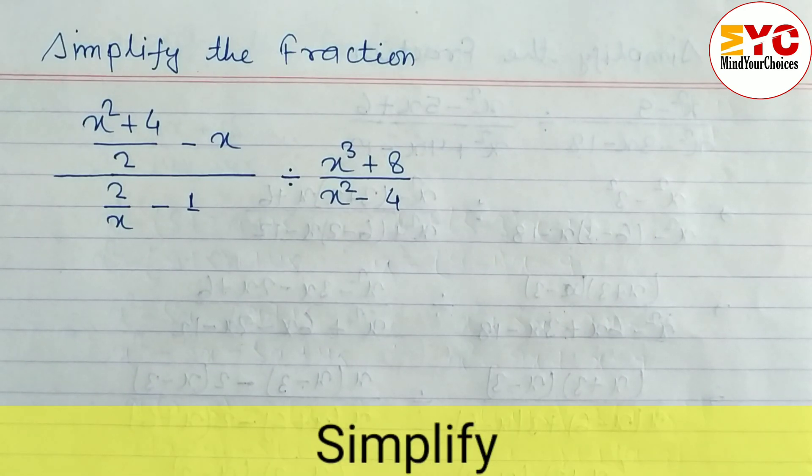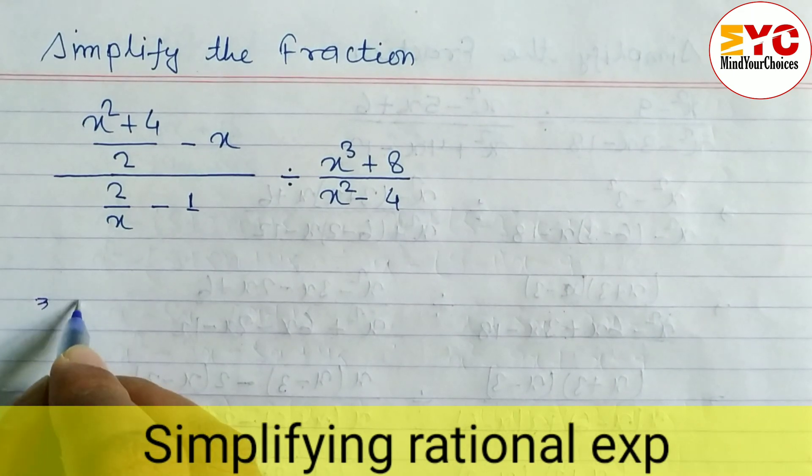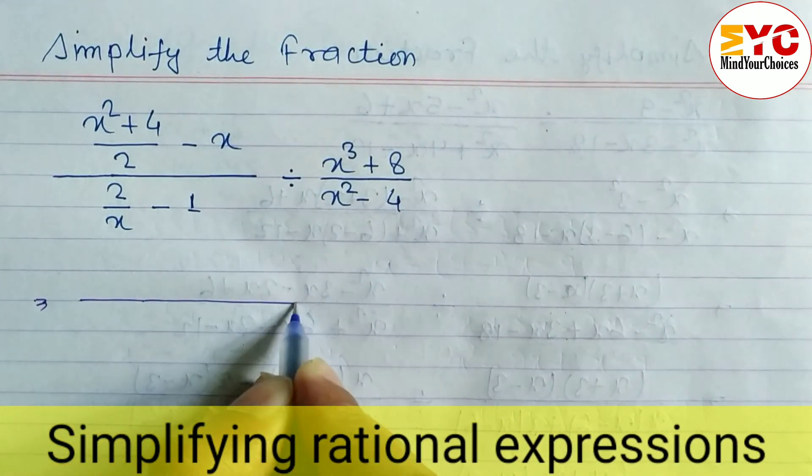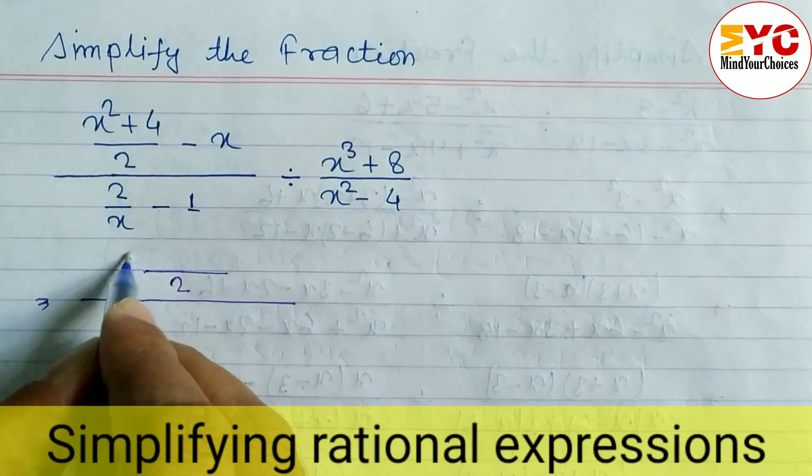In this video we will learn how to simplify the fraction. Let's take a start. You can see here this one is different than before. First of all, we have to take LCM here. LCM is 2, so we can write here x² + 4 - 2 into x, 2x.